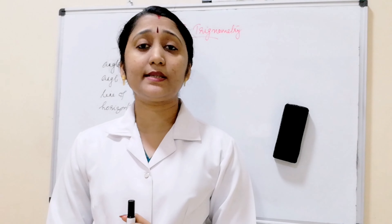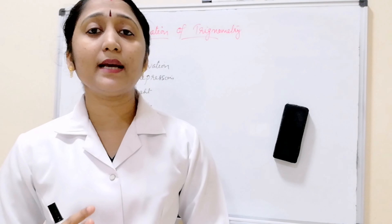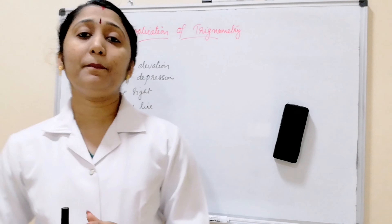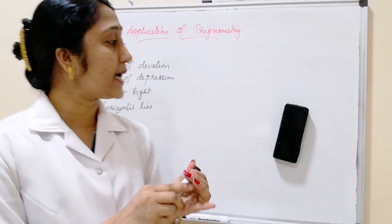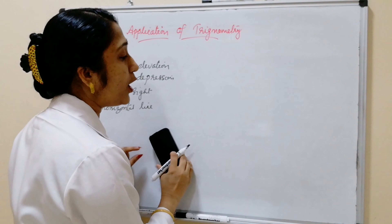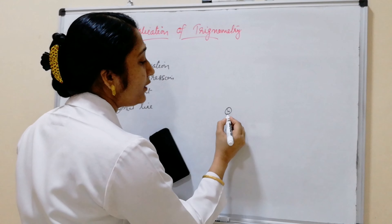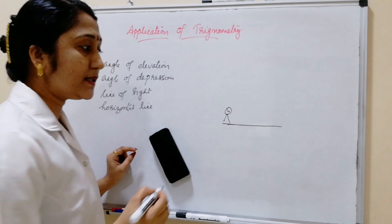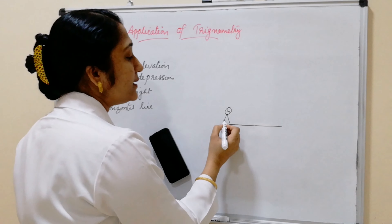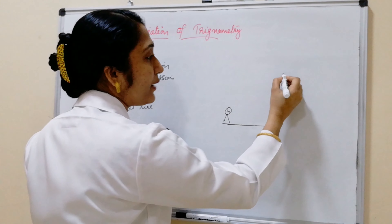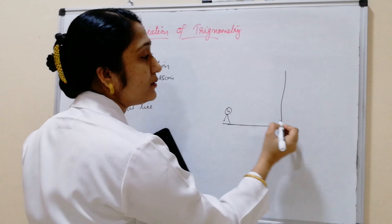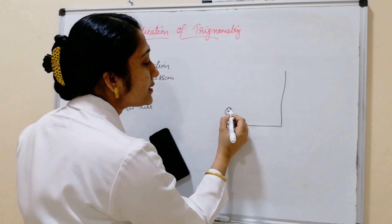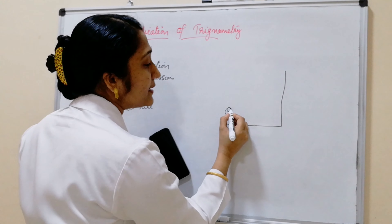Application of trigonometry is a TS SCert 12th chapter and CBSE 9th chapter. Let us start. If a boy is standing on the ground, and here one tree is there — this is the boy's eyes looking toward the tree.